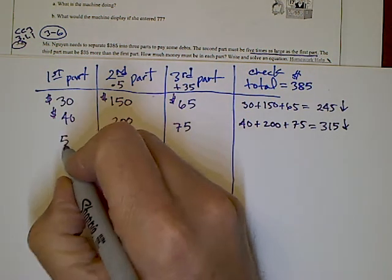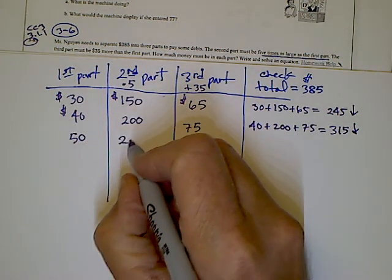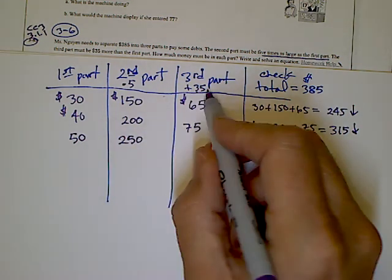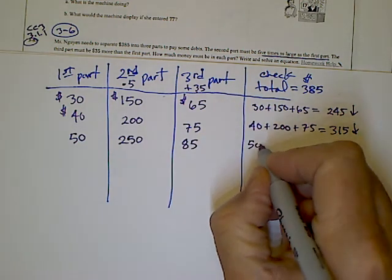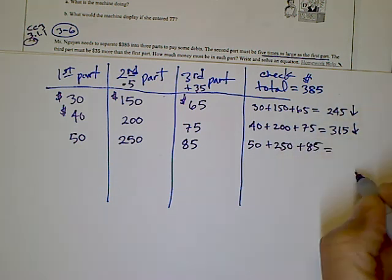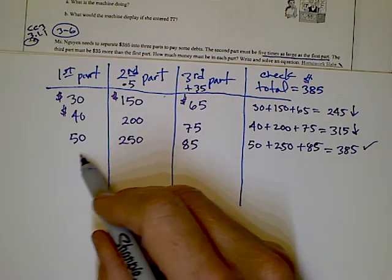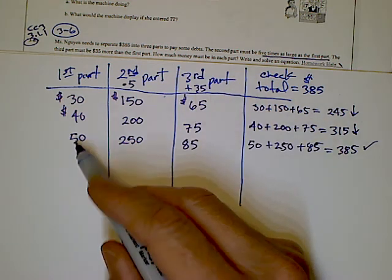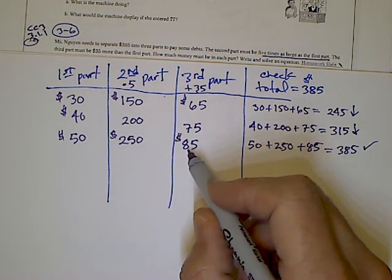Let's go $50. If I guess $50, five times would be $250, and $35 more would be $85. If I add those up, $50 plus $250 plus $85 equals $385. That's my check. So I have my answer: $50 in part one, $250 in part two, and $85 in part three.